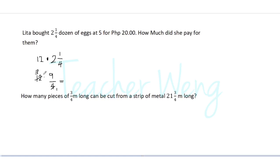So now let us multiply the resulting quotient. We have three times nine, we have twenty-seven. So all in all, Lita bought twenty-seven eggs. So if the price of egg is five for twenty pesos, how much did she pay?